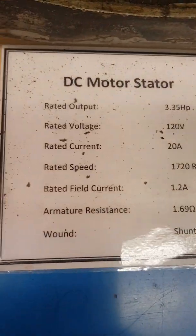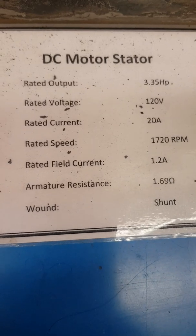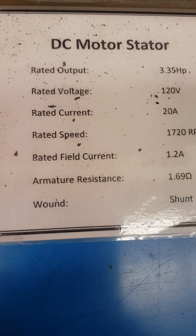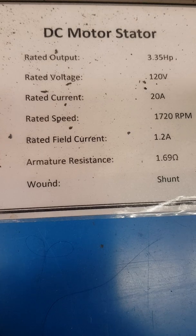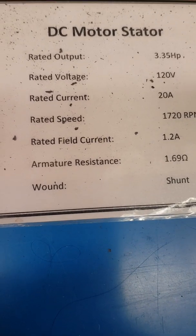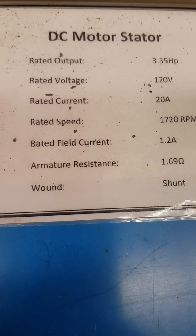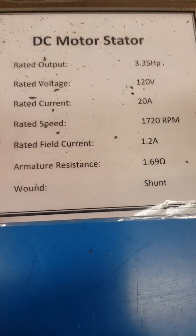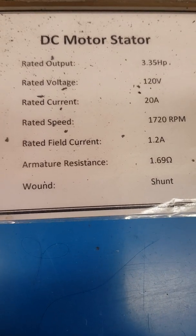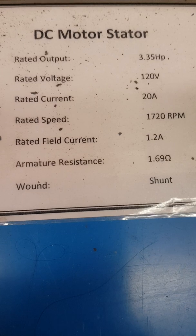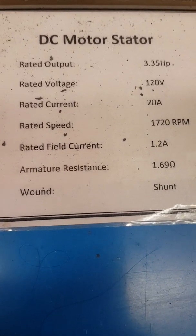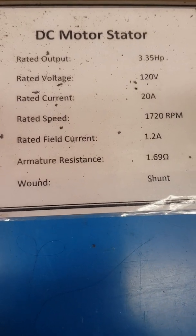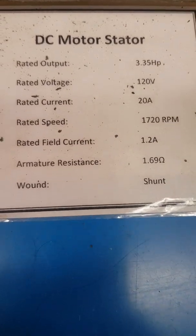This is the most important information we need to know about the motor. The rated output is 3.35 horsepower, which is basically around 2.5 kilowatt. The input voltage is 120 volt DC, the rated current is 20 amps — this is the summation of both the field current and the armature current. The rated speed is 1,720 RPM, and the field current is 1.2 amps. So the armature current is 20 minus 1.2, which is 18.8 amps. The armature resistance is 1.69 ohm.